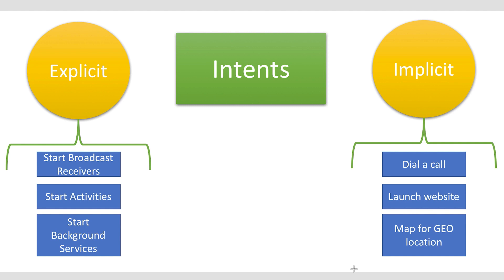The intent itself, an intent object, is a passive data structure holding an abstract description of an operation to be performed, or often in the case of broadcasts, a description of something that has happened and is being announced. The Android system finds the appropriate activity, service, or set of broadcast receivers to respond to the intent, instantiating them if necessary.